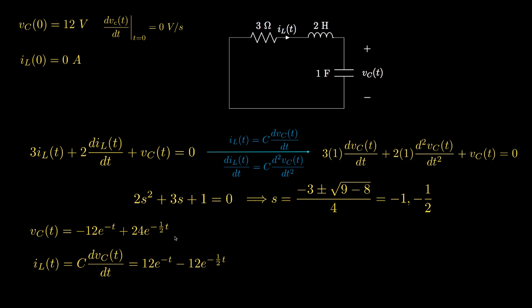The unit for the capacitor voltage is volts and the unit for the inductor current is amps, and both expressions are valid for t greater than zero.